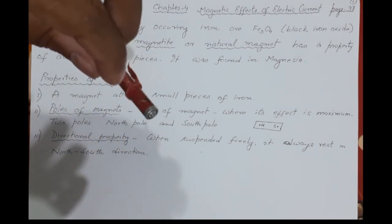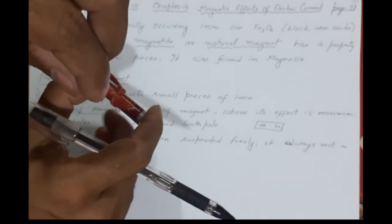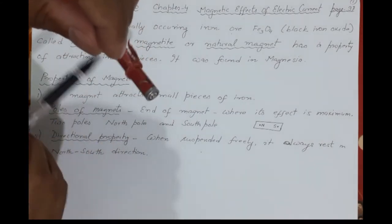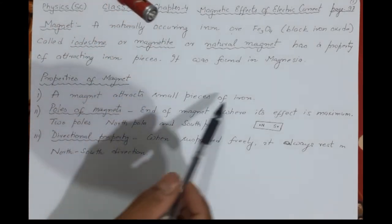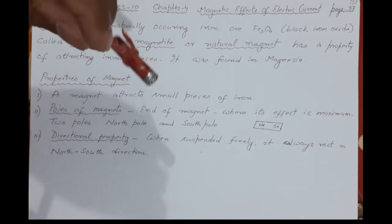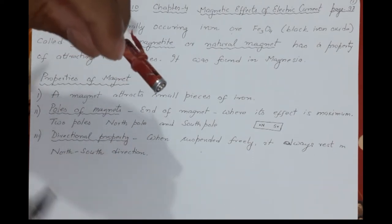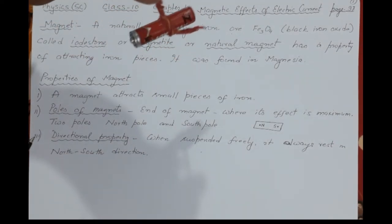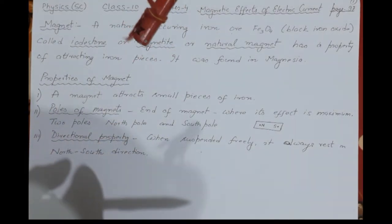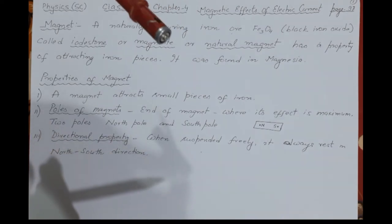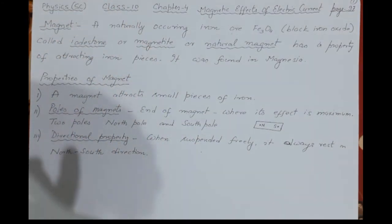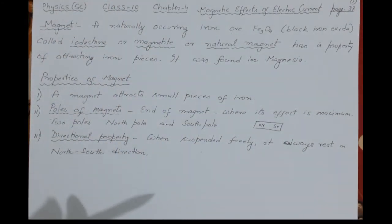Because the Earth is itself a magnet, a freely suspended magnet aligns in a particular direction. That is the directional property — the north and south poles align in the Earth's north-south direction when the magnet is free to choose. Unlike a battery, which can rest in any direction, a magnet will always rest in this specific north-south direction.